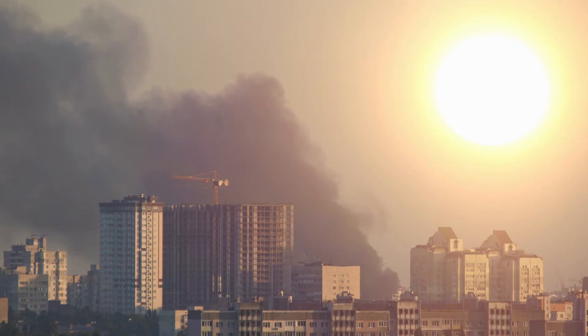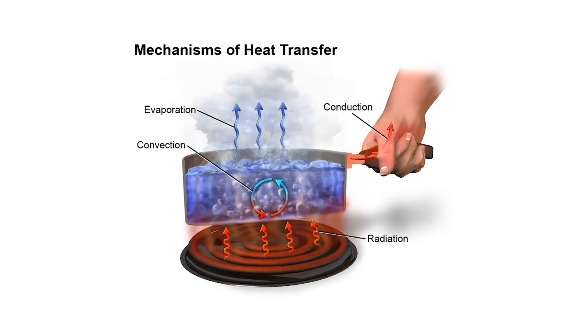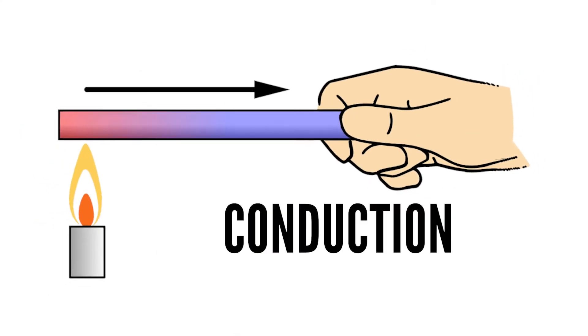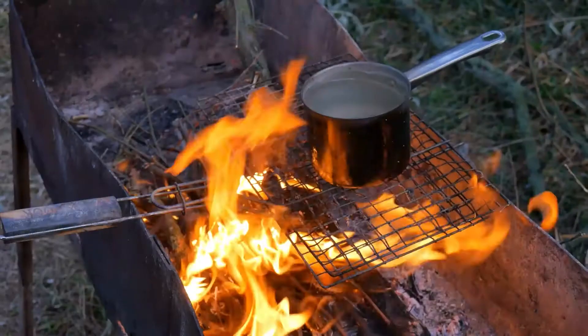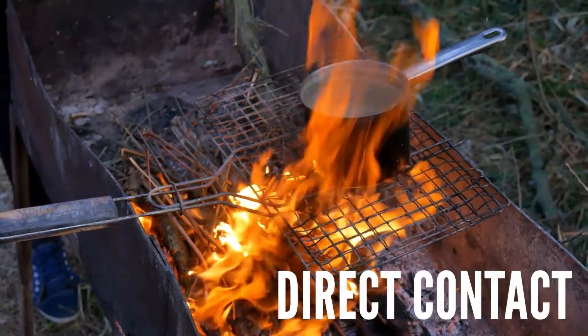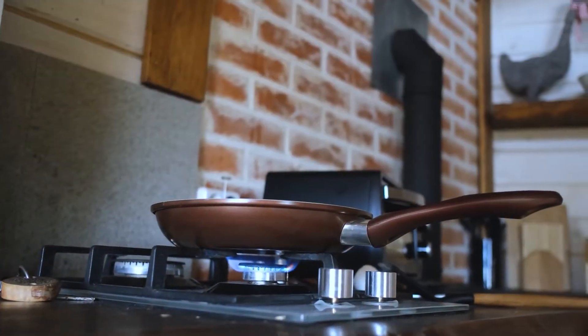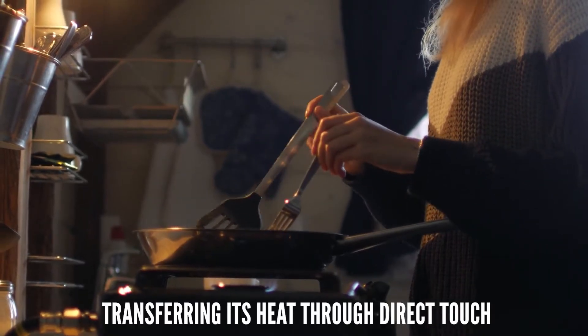Heat, the culprit behind those sweltering summer days, moves in three primary ways: conduction, convection, and radiation. Conduction, the first method, involves heat being conducted through direct contact. Picture a sizzling hot pan placed on a stove, transferring its heat through direct touch.